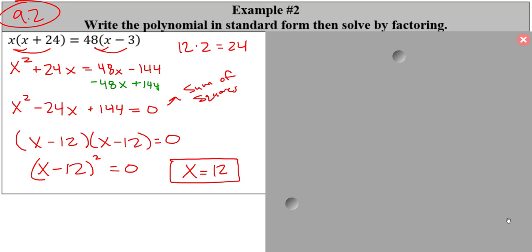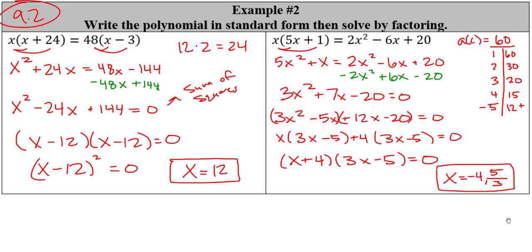Pause the video, try the next one on your own, and then come back. Welcome back. On the next one, we did not have a sum of squares. We moved everything from the right side over to the left and got 3x² + 7x − 20. My AC was 60, I did have a negative C term, so I'm looking for a positive and a negative with a difference of seven — that would be 5 and 12. I ended up with x = negative 4 and x = 5/3.